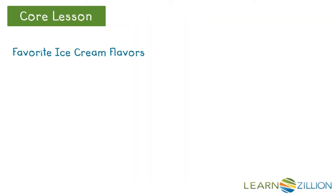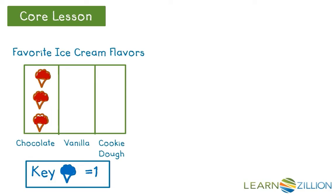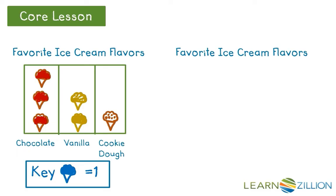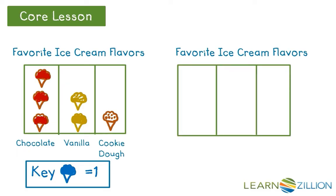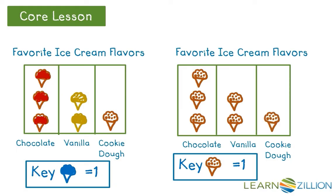You have probably seen picture graphs similar to this one that use a different symbol for each category. In this lesson we will be thinking about creating picture graphs that use the same symbol for each category. It is important to know that in these picture graphs we want to use the same symbol for every category on the graph. This graph has the same information but unlike the first example the symbols are all the same. We know that chocolate has three votes because it has three cones. The category label tells us the flavor and the cone symbol tells us how many in each.